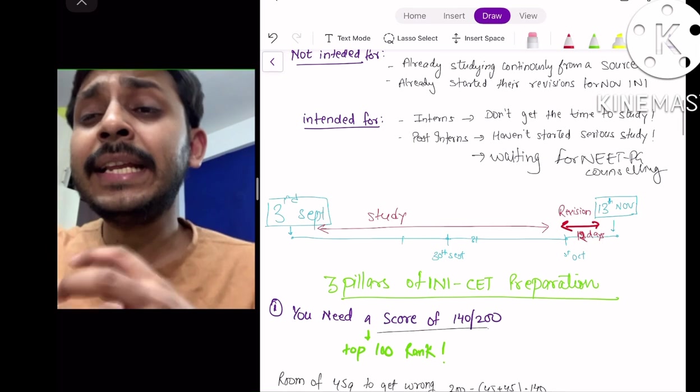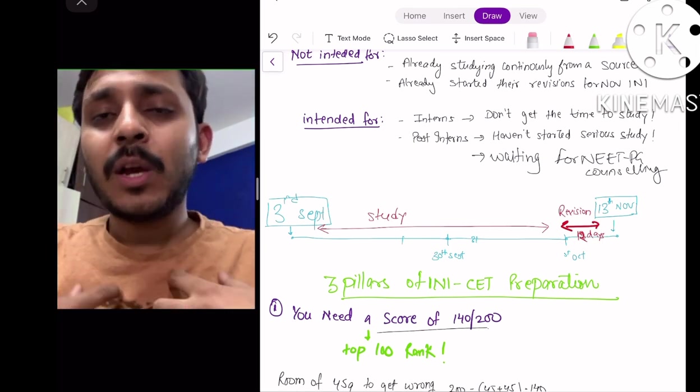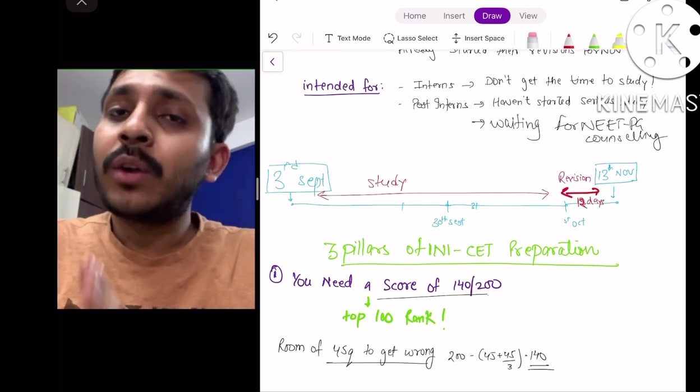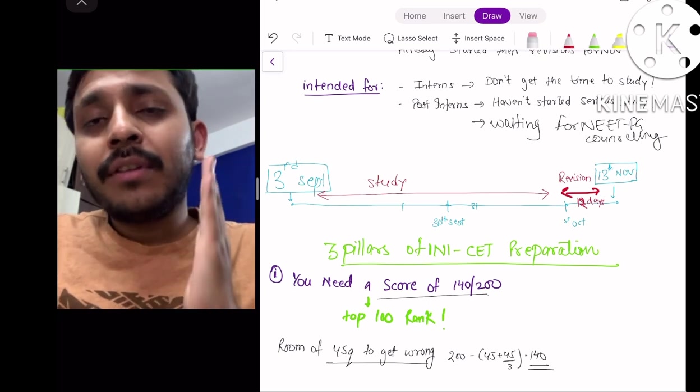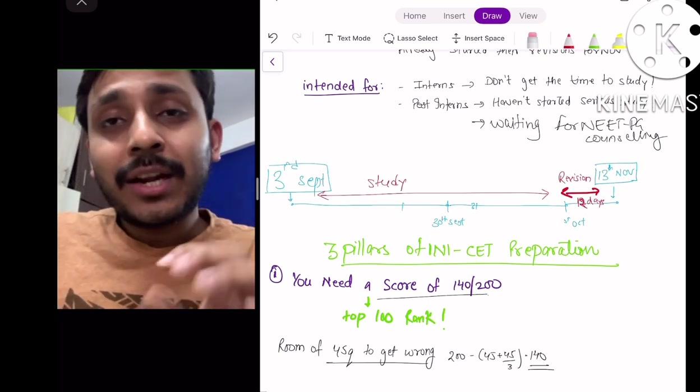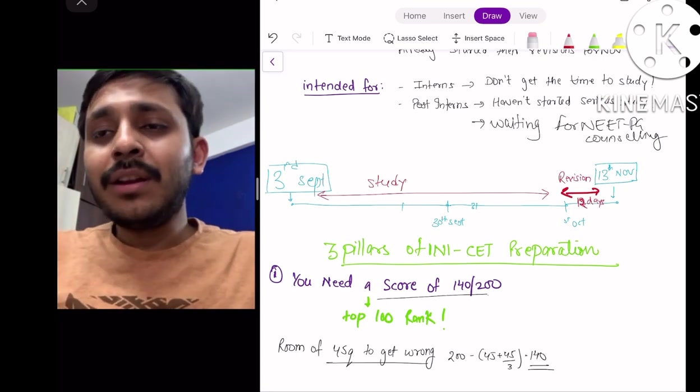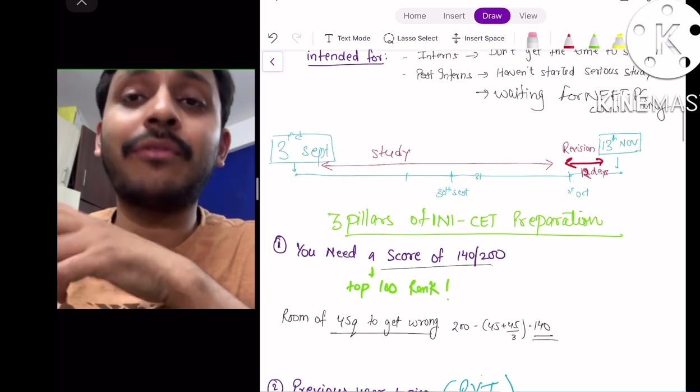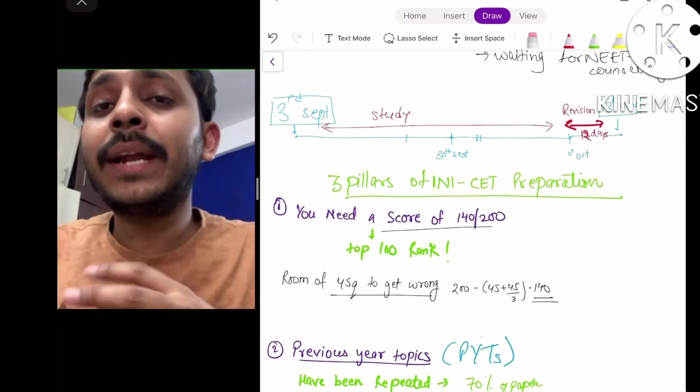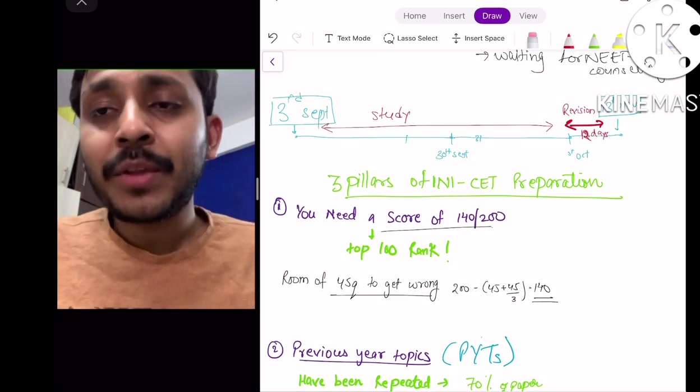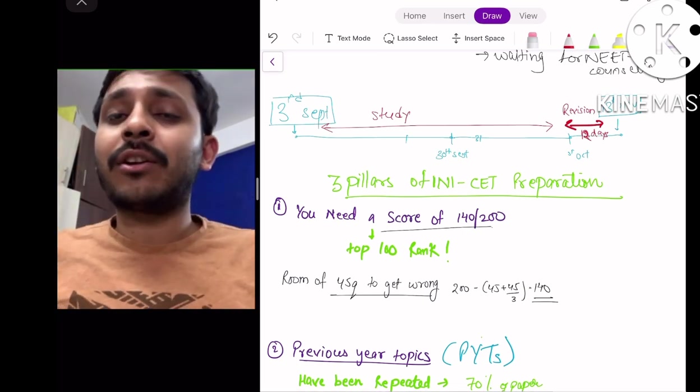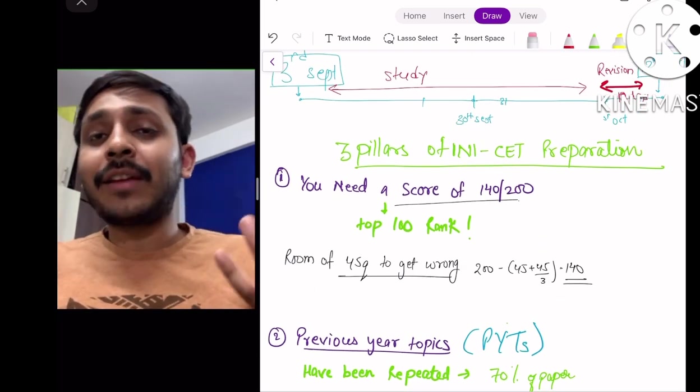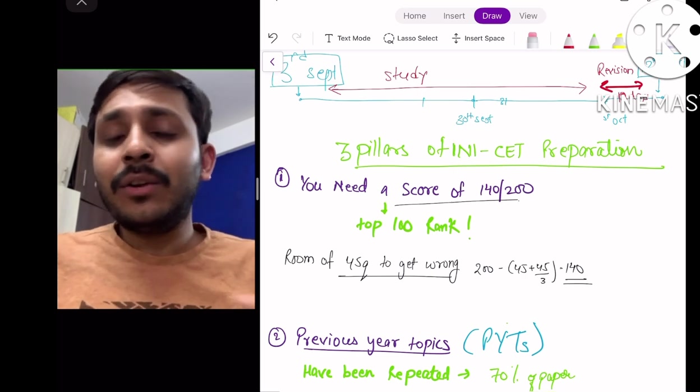Now what are the 3 important pillars of INI-CET preparation? First is that you need to know that you do not need to get 200 out of 200 questions correct. If you are able to get 140 out of 200 questions correct, you will get a top 100 rank, and this is coming from someone who has gotten a lot of questions in his INI-CET examinations wrong. I still got rank 4 because I knew that out of 200, I need to have a final score of just 140. So you have a room of around 45 questions to get wrong, and 45 questions is a lot. You don't actually need to worry about questions like what is the half-life of letrozole - these questions are irrelevant, they don't determine your rank at all.